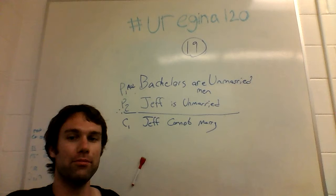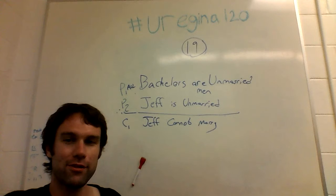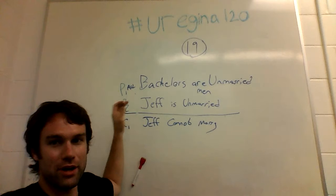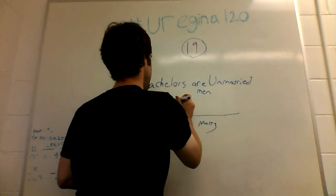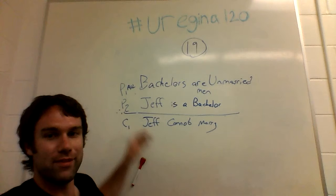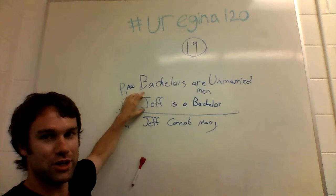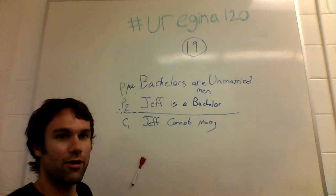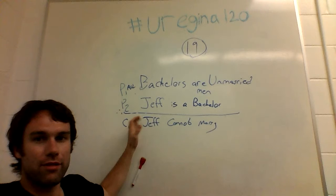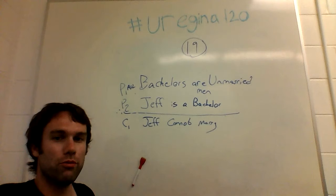And yet it's strange, because there's kind of this internal twisted logic to it. Jeff is a bachelor, and there's a relationship where Jeff is part of this set of bachelors, and the conclusion is Jeff cannot marry. So what is wrong with this situation where the argument has kind of internal coherence and yet still isn't quite true?